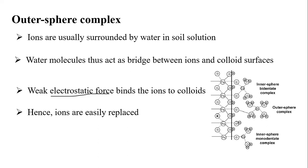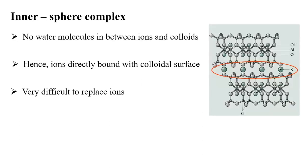Due to this weak electrostatic force in the outer sphere complex, replacement of ions can take place. For example, calcium may be replaced by magnesium or sodium. This weak bonding allows exchangeable cation reactions — most agricultural cation exchange reactions happen through this outer sphere mechanism.